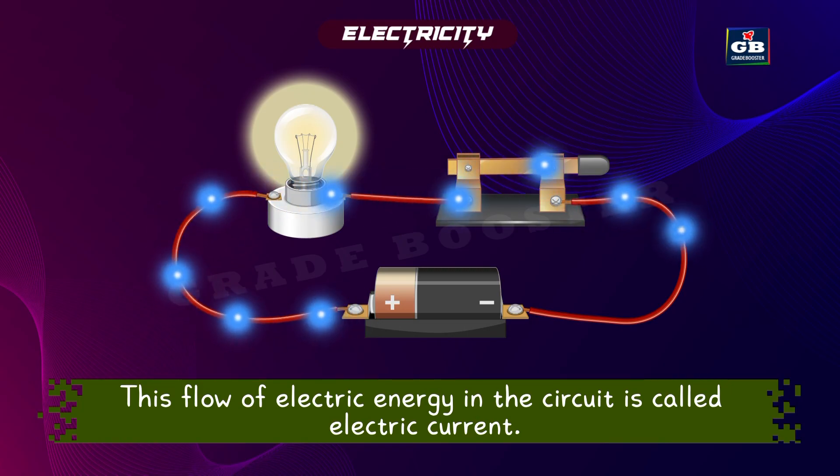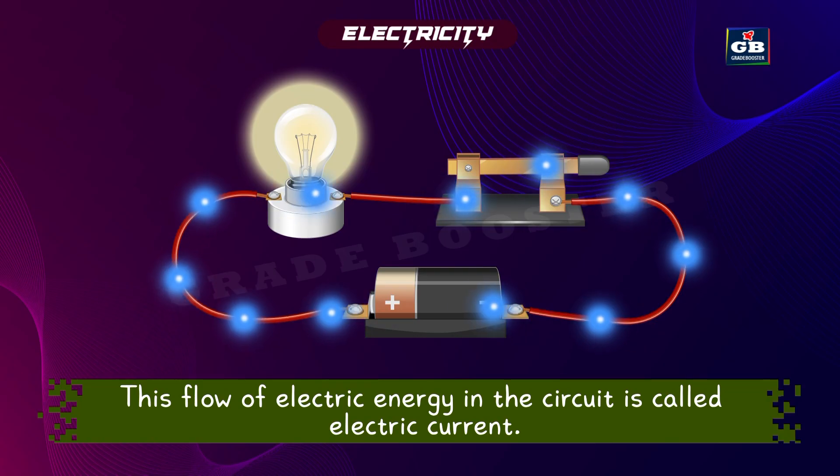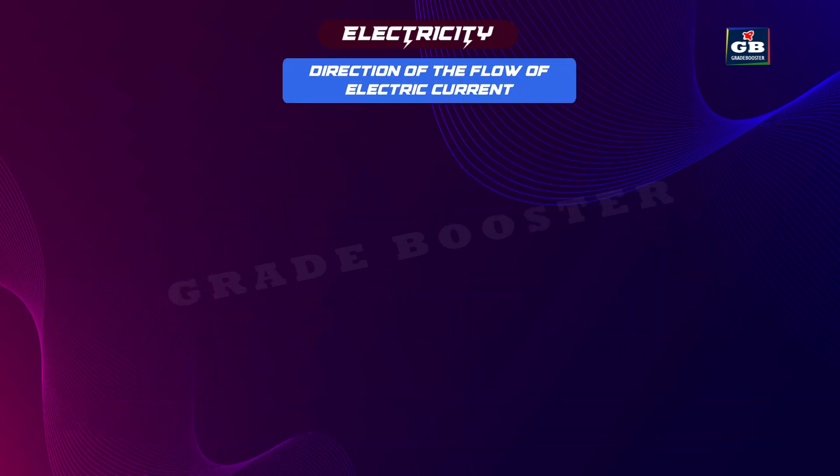When the switch is on, the circuit becomes complete and the electricity starts flowing in the circuit. This flow of electric energy in the circuit is called electric current.